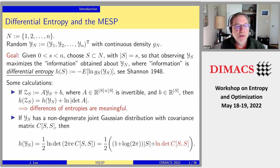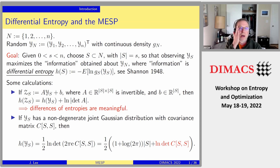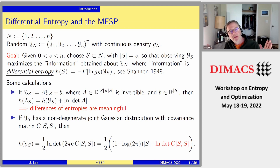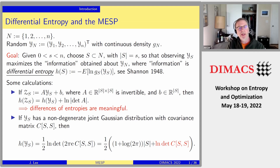To frame this mathematically: we have a finite set one through n, and we have n random variables with continuous density function. These are correlated random variables. Given a number s between one and n, I want to choose a subset of size s so that when I observe this subset, I maximize the information obtained about the whole vector just from looking at this subvector.